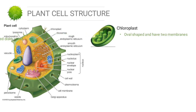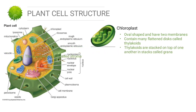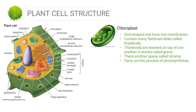The next organelle is the chloroplast. Chloroplasts are oval-shaped and have two membranes. They contain many flattened structures called thylakoids, which are stacked on top of one another in stacks called grana. There is another space in the chloroplast called the stroma. The main function of the chloroplast is to carry out the process of photosynthesis.